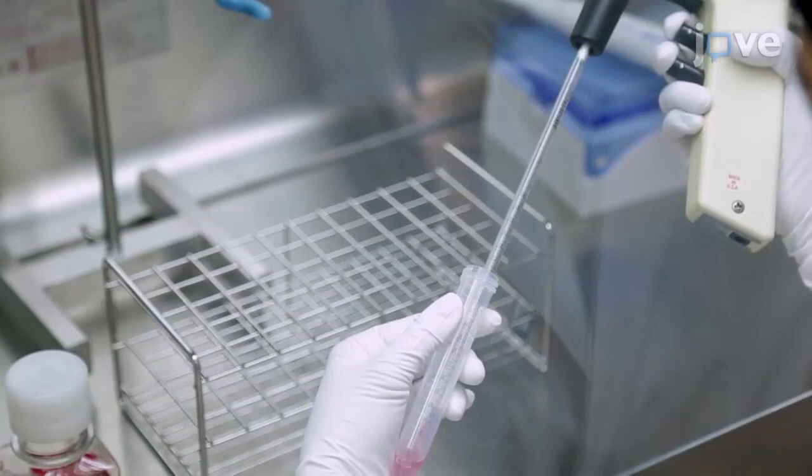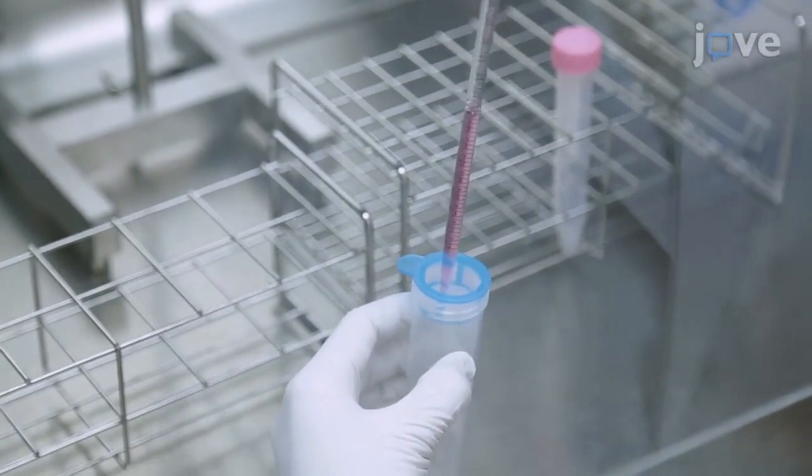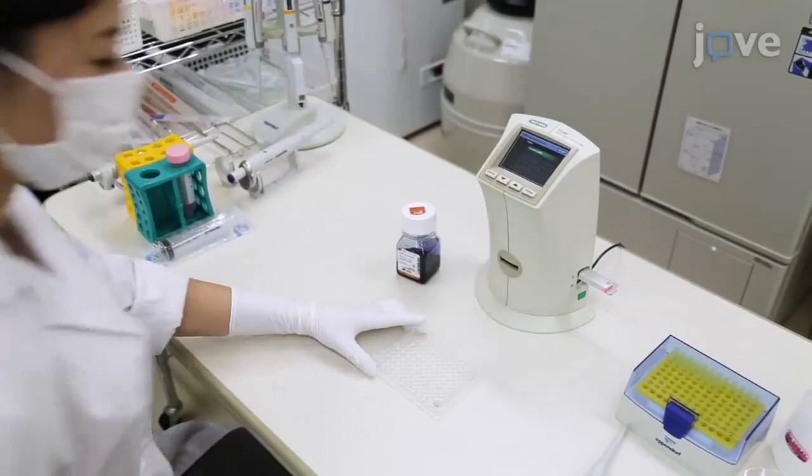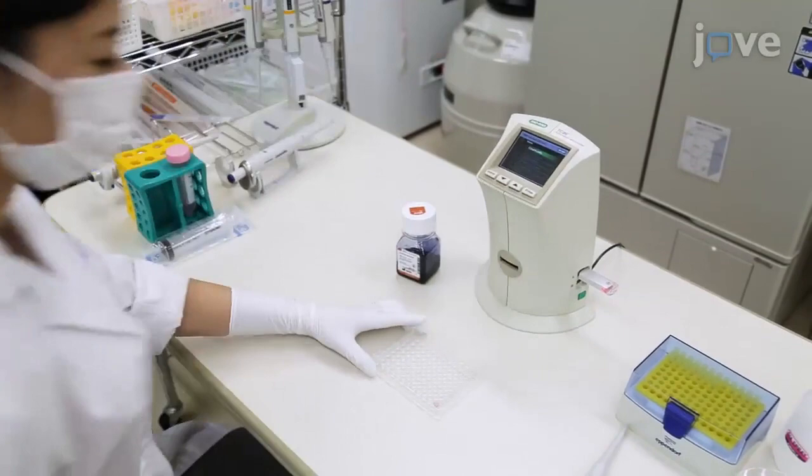Resuspend the resulting pellet in 1 milliliter of culture medium. Filter the cell suspension through a 40-micron cell strainer to collect a single cell suspension. Add Trypan Blue to an aliquot of the cell suspension and perform a cell count. Then prepare 20 milliliters of cell suspension at 2 times 10 to the 5th cells per milliliter.